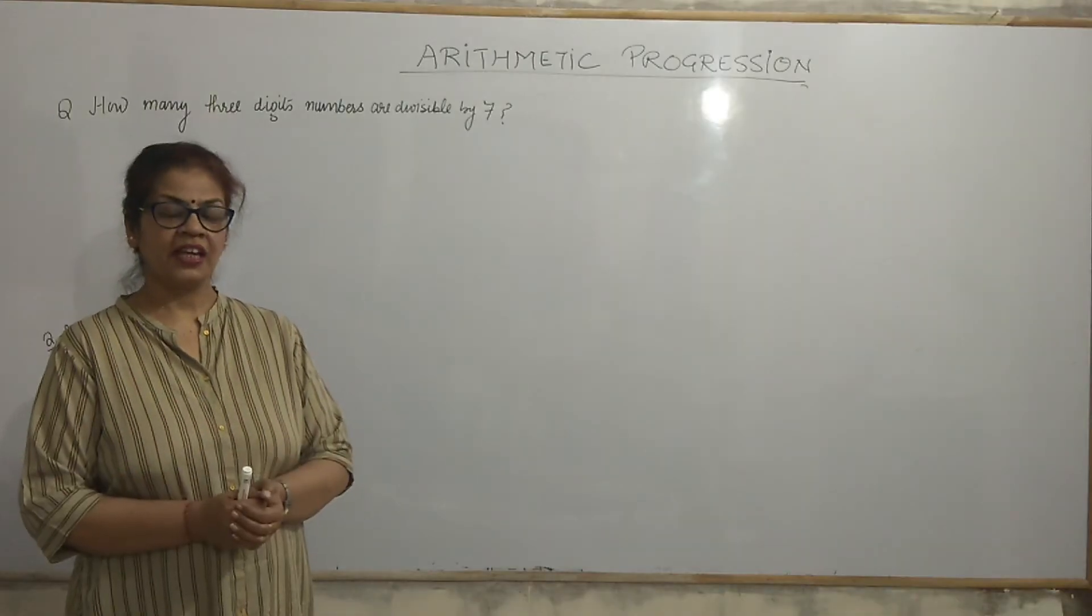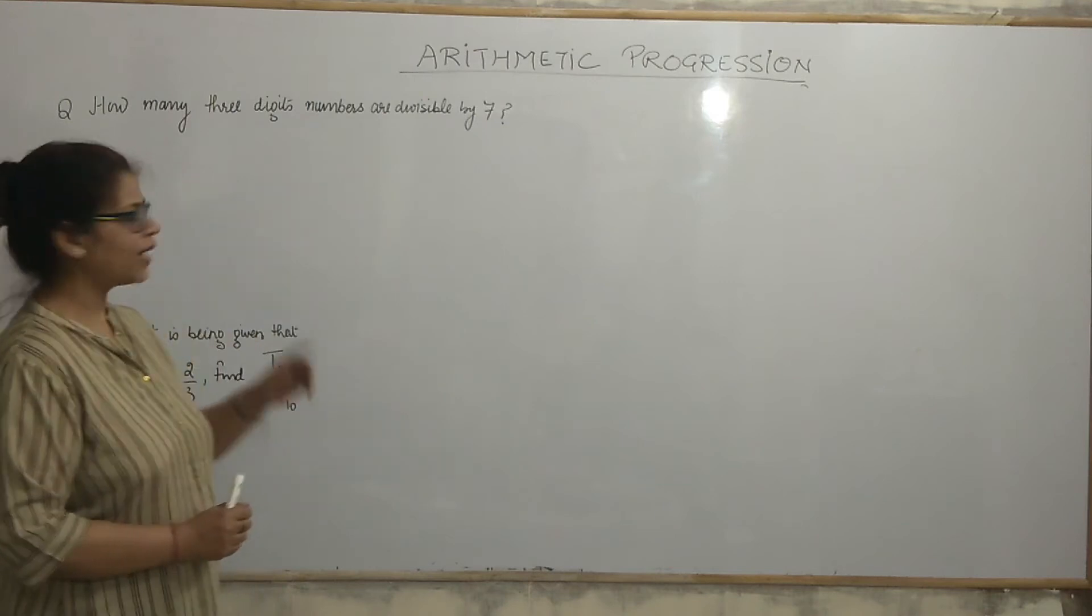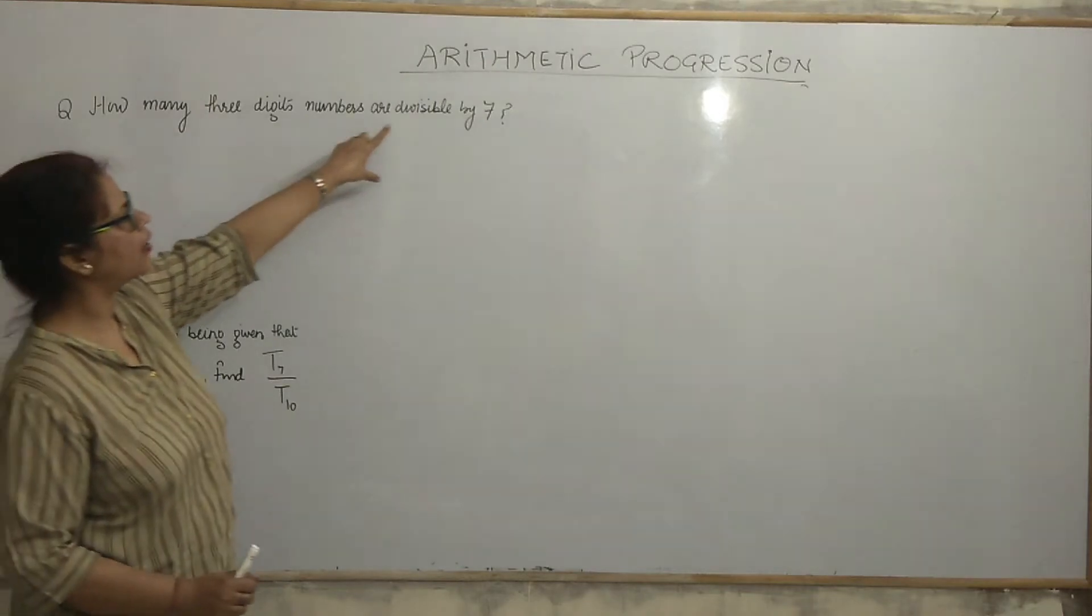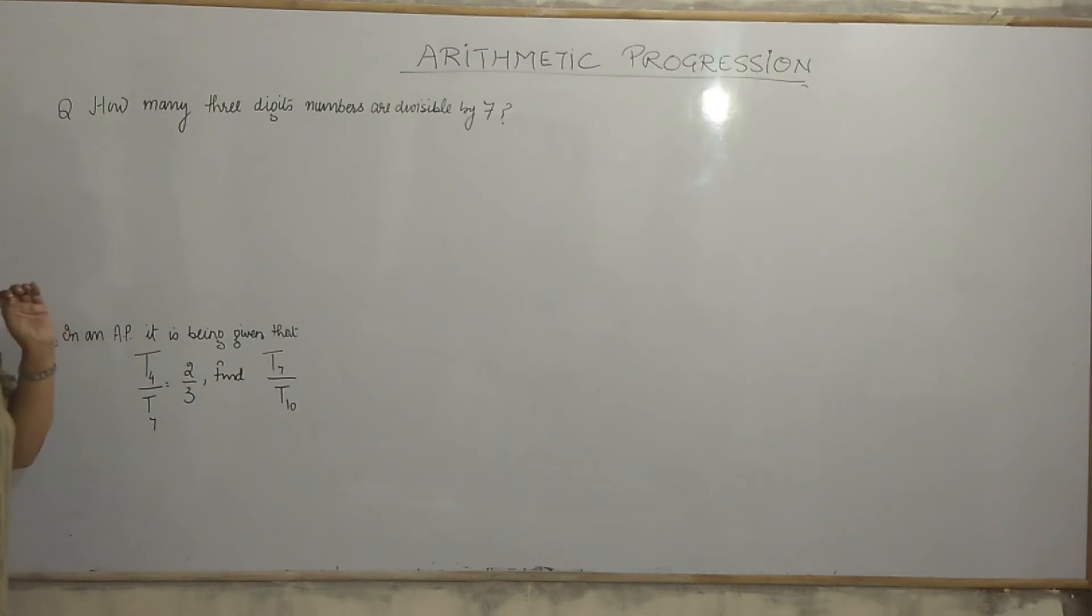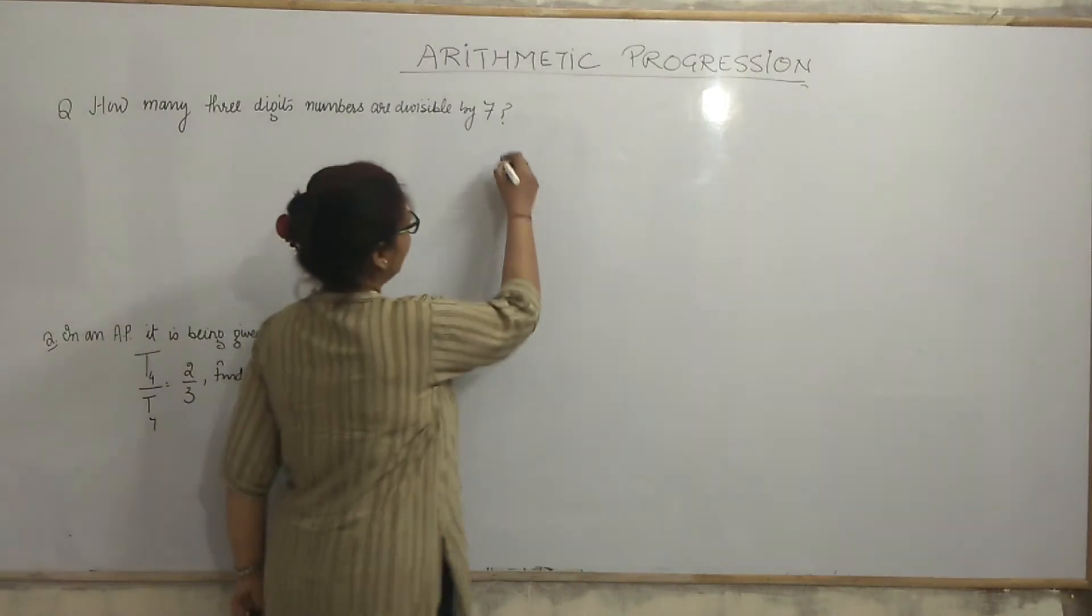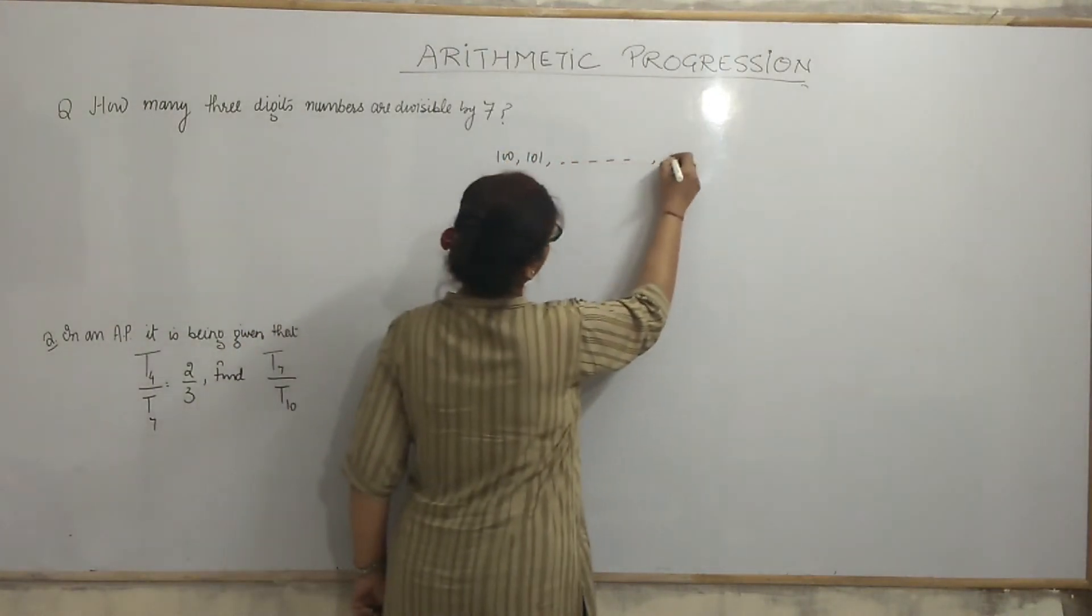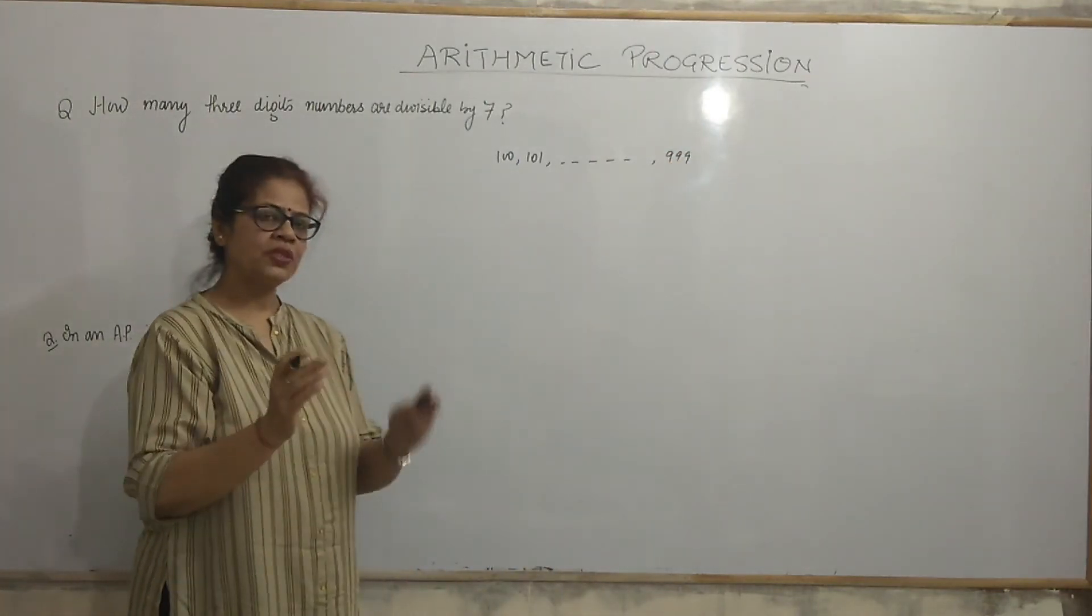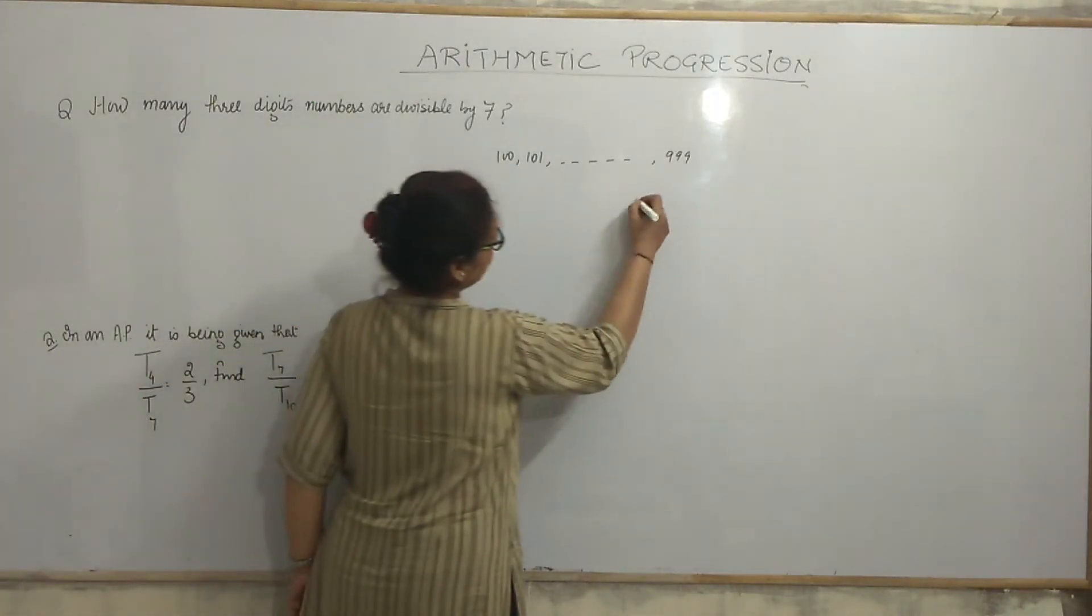Hello students, in continuation of previous lecture, now we move to next question. Our question is, how many 3-digit numbers are divisible by 7? Now, we think from where these 3-digit numbers started. 3-digit numbers started from 100 and ends up 999.